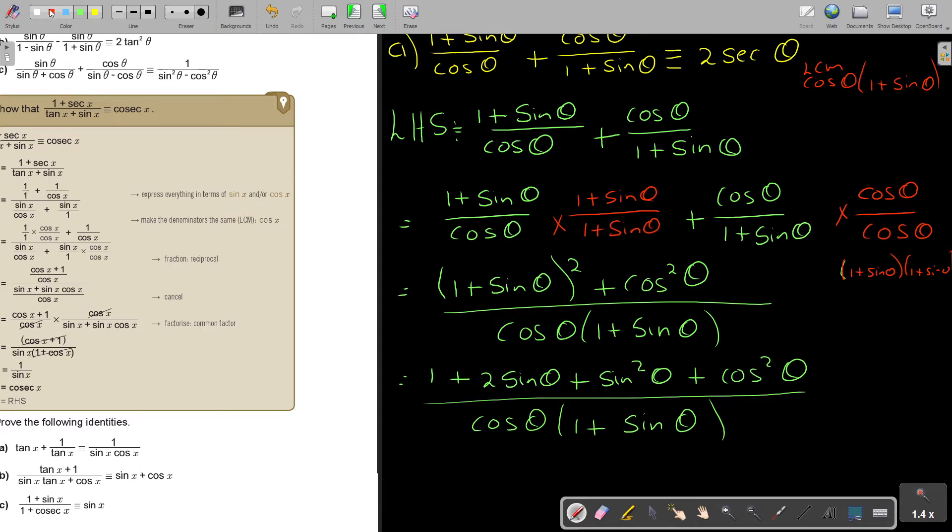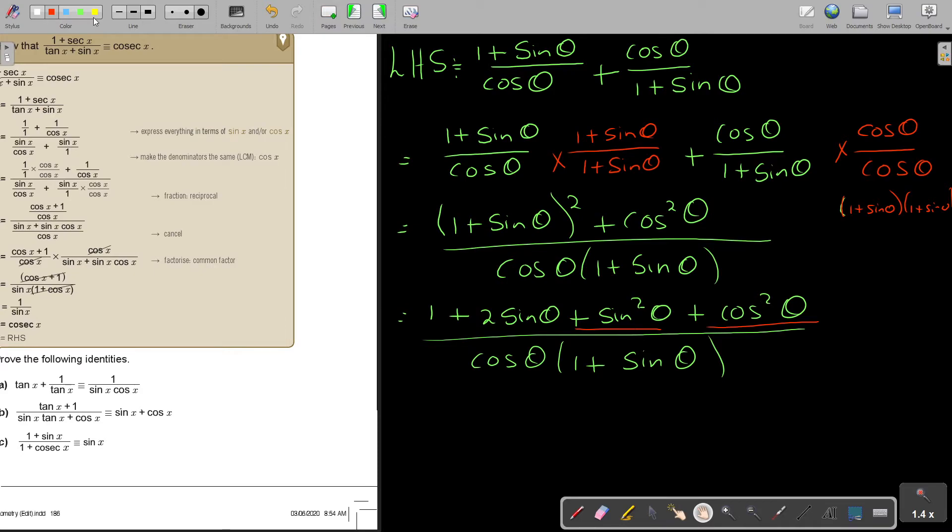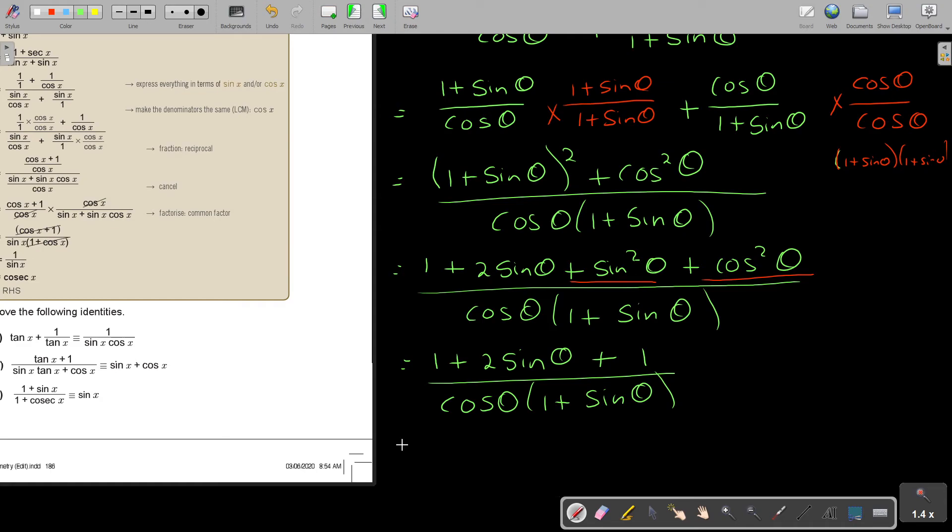Now let's see what do I have. Sin squared theta plus cos squared theta, that looks like 1. So this becomes 1. I know it's a bit long, but just to help you. You could have already wrote 2. So if I go up, that's going to be 2 plus 2 sin theta over cos theta times 1 plus sin theta.